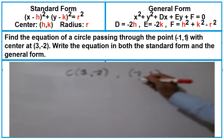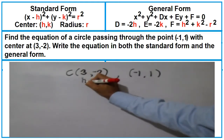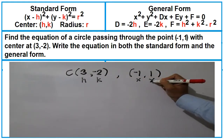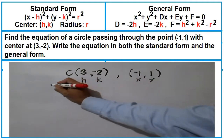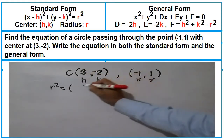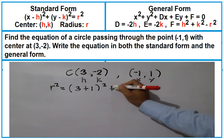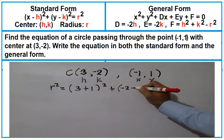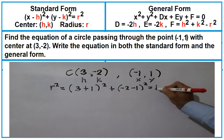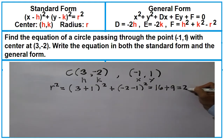The center is (3, -2) and the point is at (-1, 1). R squared is (3 plus 1) squared plus (-2 minus 1) squared, which equals 4 squared is 16, plus (-3) squared is 9. This equals 25.